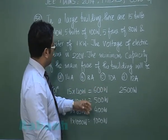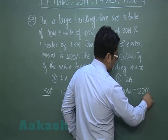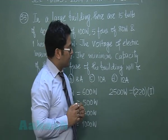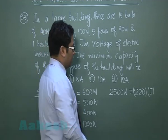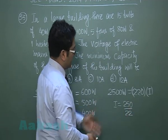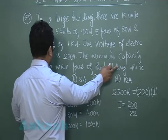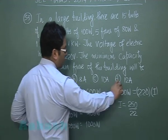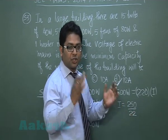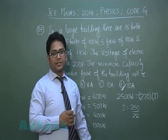This total wattage is consumed via the main supply of 220 V. Each element gets 220 V, and the net current passing through the fuse wire is I = P/V = 2500/220 ≈ 11.36 A. The question asks for the minimum fuse capacity, so from the given options, 12 ampere is the best answer since the current is slightly above 11. Option D, 12 ampere, is correct.